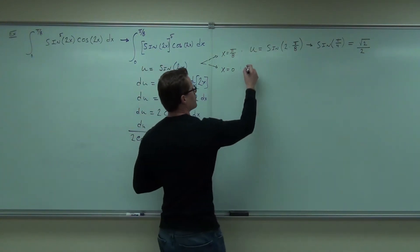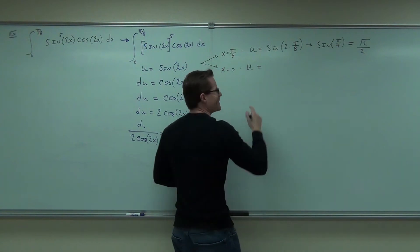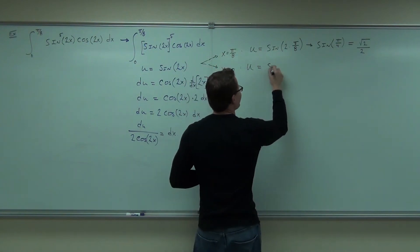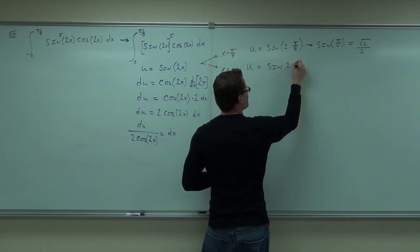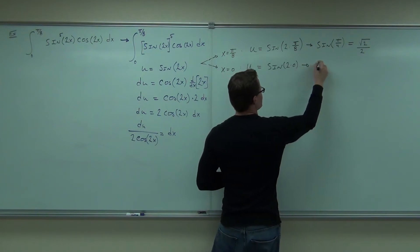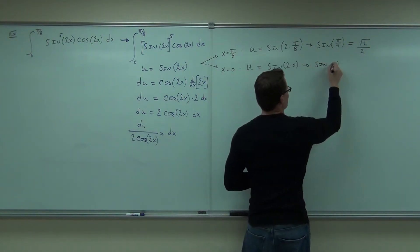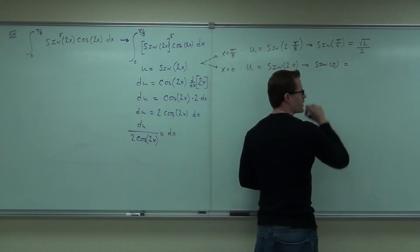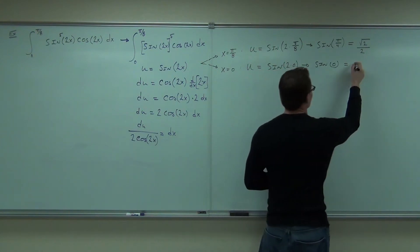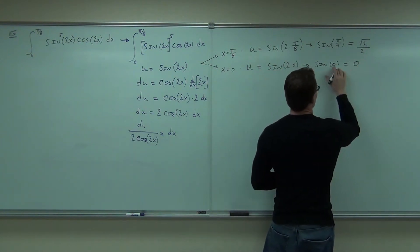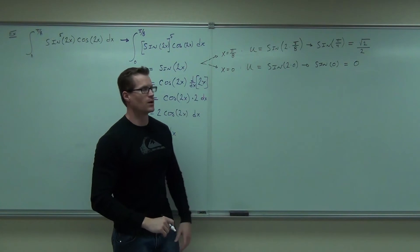Let's do the 0 — I'll take care of the 0 for you. Sine of 2 times 0, that's sine of 0. Sine of 0 is 1, right? — just checking. It's 0. Sine of 0 is 0.